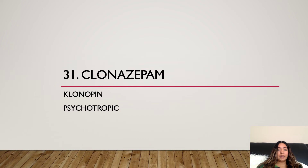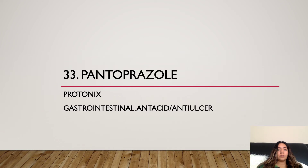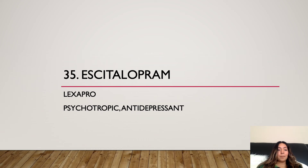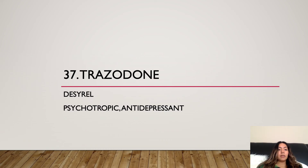Number thirty: Lisinopril/Hydrochlorothiazide, brand name Zestoretic, cardiovascular antihypertensive. Number thirty-one: Clonazepam, brand name Klonopin, psychotropic. Number thirty-two: Fluoxetine, brand name Prozac, psychotropic antidepressant. Number thirty-three: Pantoprazole, brand name Protonix, gastrointestinal antacid/anti-ulcer. Number thirty-four: Cyclobenzaprine, brand name Flexeril, musculoskeletal muscle relaxant. Number thirty-five: Escitalopram, brand name Lexapro, psychotropic antidepressant. Number thirty-six: Meloxicam, brand name Mobic, analgesic NSAID.